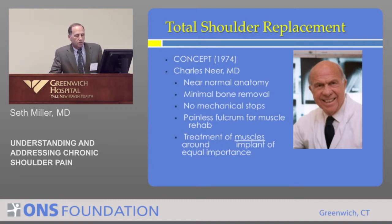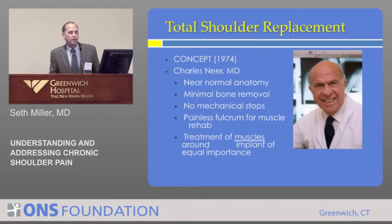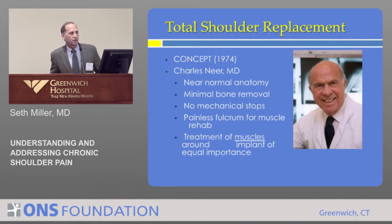The concept of total shoulder replacement is really critically related to this man — Charlie Neer — who was at Columbia Presbyterian. I was fortunate to be his second-to-last fellow in 1989, and learned a tremendous amount about shoulder replacement. He was really the pioneer of this operation. His concepts were to preserve anatomy, take out as little bone as possible, have no mechanical stops so the joint wouldn't loosen, and that the replacement was really a fulcrum for muscle rehabilitation. He emphasized time and again that if you just do the replacement without working on and properly balancing the muscles, it's not going to work.